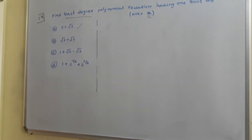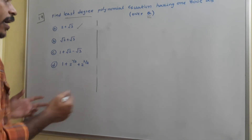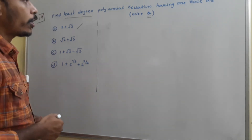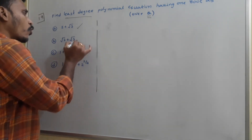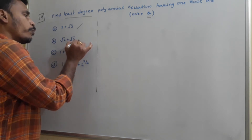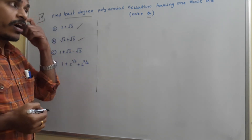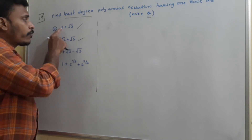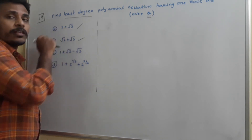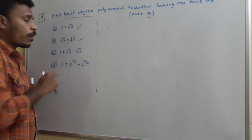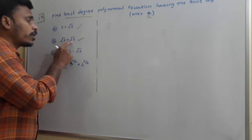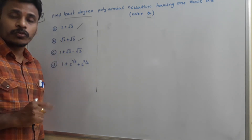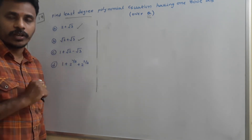Now, second problem. Again, the same question: we need to find the least degree polynomial equation over rationals. One root is root 2 plus root 3. For the first problem it was only 2 plus root 3, whereas for the second problem both terms have a root — root 2 and root 3 — and both are irrational numbers. We need to eliminate both of those.